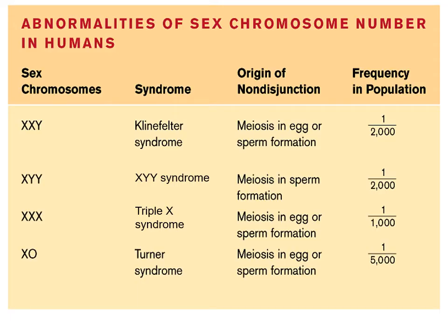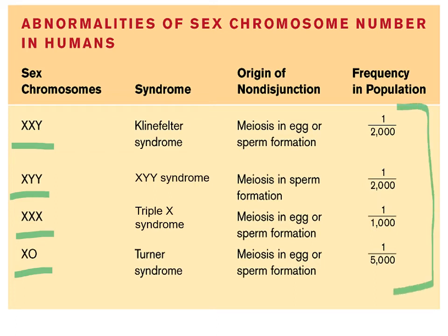If the gametes used to create the zygote produce a zygote with two X chromosomes and one Y chromosome, that's called Klinefelter syndrome. It could also have two Y chromosomes and one X, three X chromosomes, or a single X chromosome. A single Y chromosome would not survive. These conditions have different names and the chances of them occurring are not particularly small. These are non-fatal mutations, so the bearer of these genetic traits is able to survive.